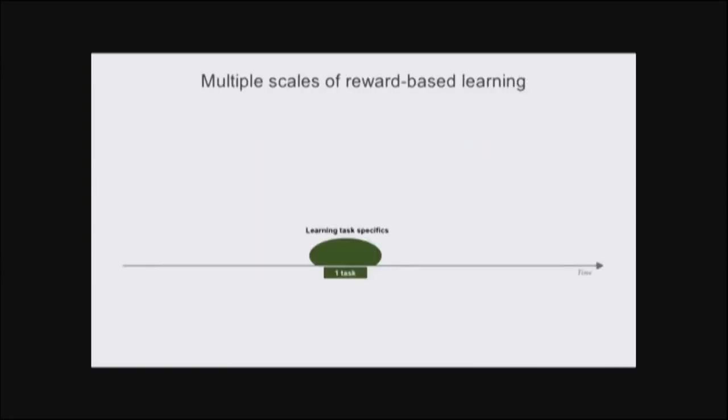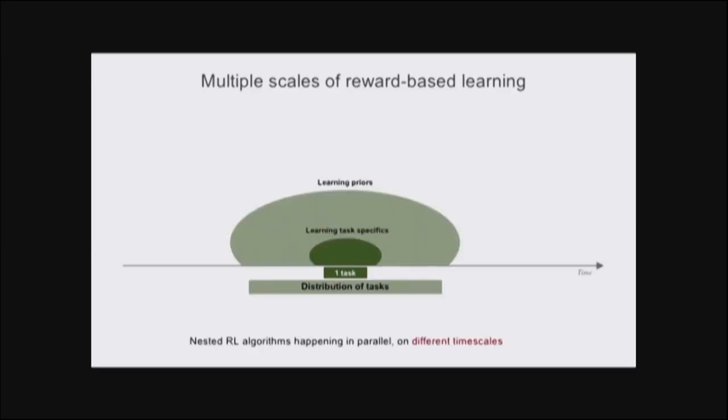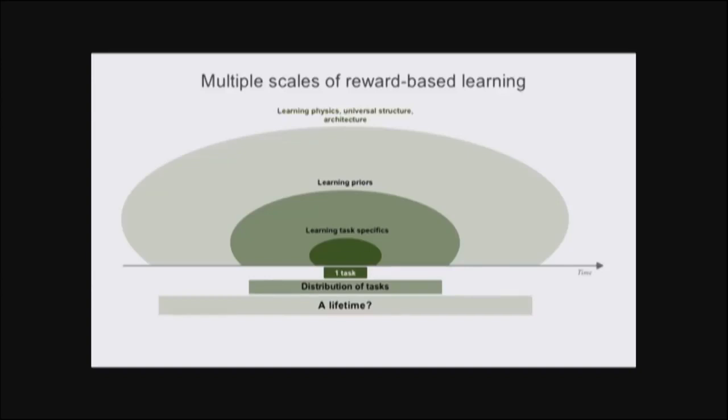Broadly speaking, we can conceptualize different nested timescales of reinforcement learning happening in parallel. The shortest timescale corresponds to learning within a single episode, such as which specific object is rewarding. At the next level, we have learning across episodes, learning task structure, which we can think of as priors. Learning at one scale makes learning at lower scales easier. It's possible to take this further to think about how we can learn to learn the priors, such as having the notion of physical consistency, objects, object permanence, and physics. This is learning done over a lifetime or even multiple lifetimes, such as with evolution.